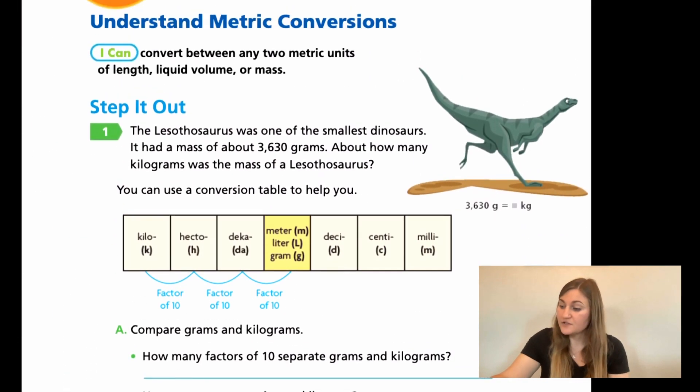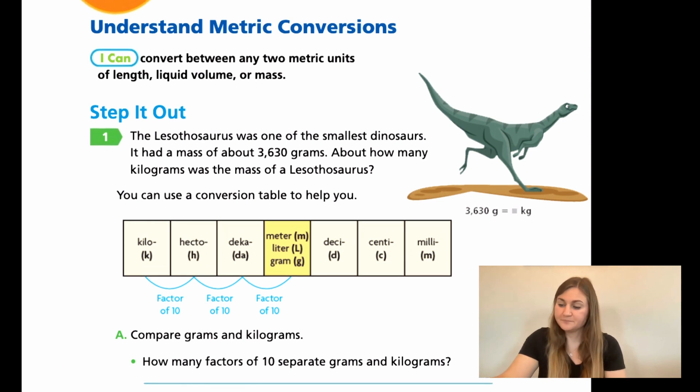All right, so moving into the lesson, we're on page 455. We have a step it out number one. It says the Lesothosaurus was one of the smallest dinosaurs. It had a mass of about 3,630 grams. About how many kilograms was the mass of the Lesothosaurus? So we have 3,630 grams. We want to know how many kilograms that is.